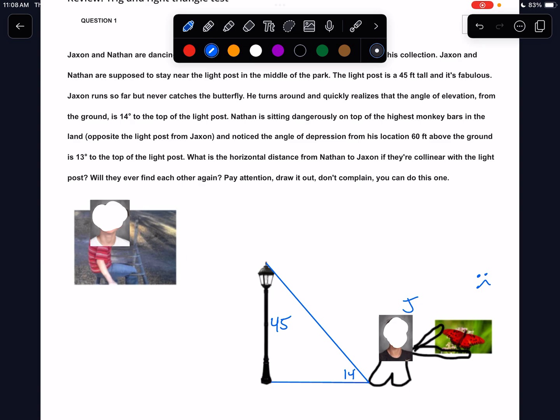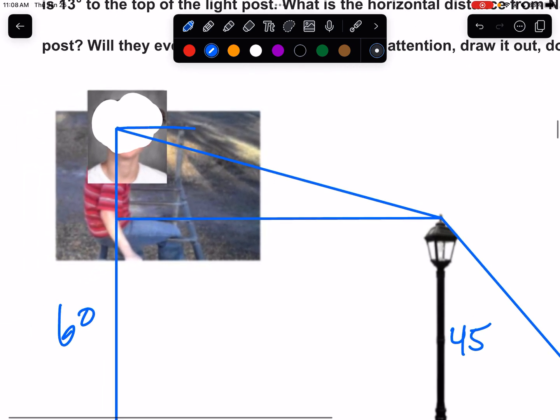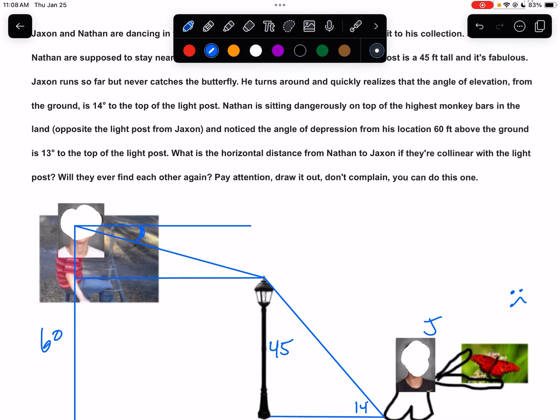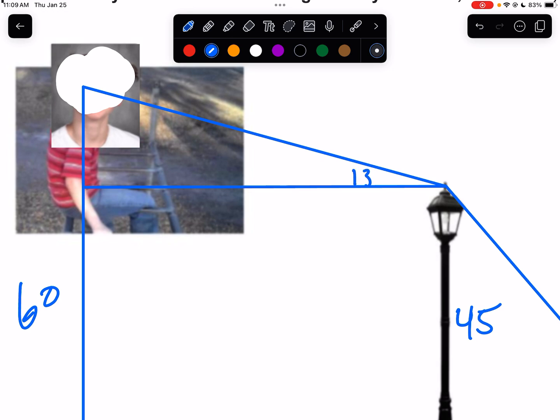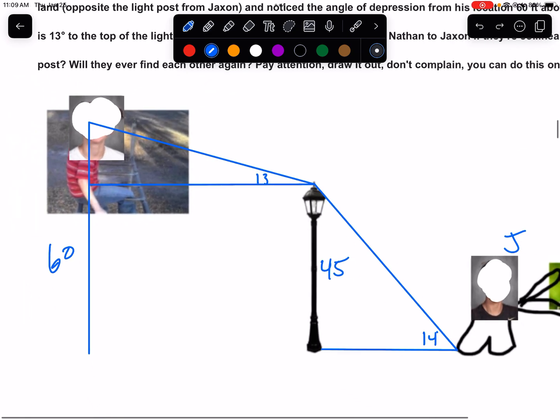Nathan is sitting dangerously on top of the highest monkey bars in the land, opposite the light post from Jackson. And notice the angle of depression from his location, 60 feet above the ground. All right. So he is 60 feet above the ground. Get that number in there. That'd be 60 feet above the ground to be 13 degrees to the top of the light post. So that would look something like this. So I could draw the triangle like that, or I could draw it out like this. It doesn't matter. But technically, this is the angle of depression. Angle of depression is 13 degrees. But Jackson's depression of 13 would be equal to this elevation being 13. Remember that those are alternate interior angles. So I'm going to put it there. I think it's a little bit easier to see. If the entire height is 60, the light post is 45, wouldn't that leave me with 15 feet here? Yes. The answer is yes.